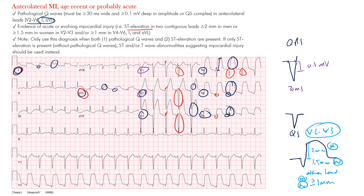If there's only ST segment elevation without pathological Q waves, we call this a myocardial injury pattern. Infarct is diagnosed when Q waves start developing — we can see them forming especially in the lateral leads, with some notching in others. This EKG is from a patient who presented with acute onset chest pain 30 minutes prior, which is why we don't yet see significant Q waves developing.